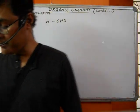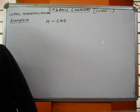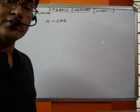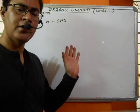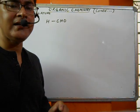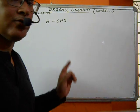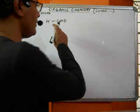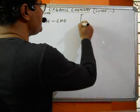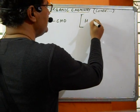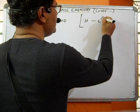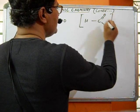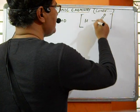In my last class I discussed naming of ketones and branched ketones. Today I am going to start with naming of aldehydes, written as -CHO. You should be doing the structure of these functional groups. I can also write this as H-C double bond O-H. So this is my functional group.